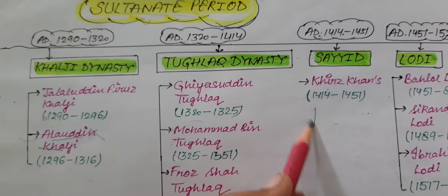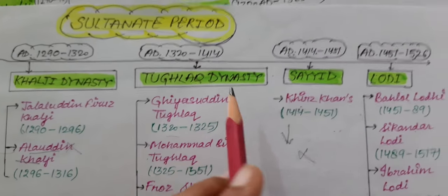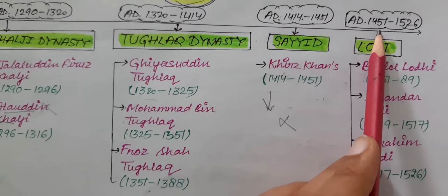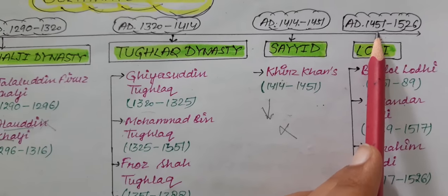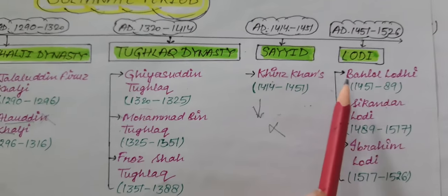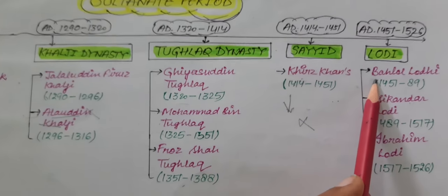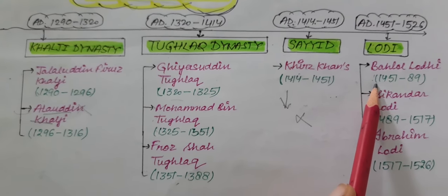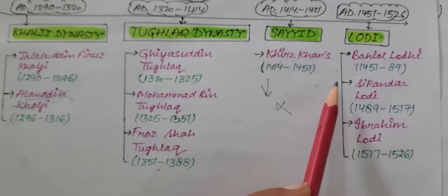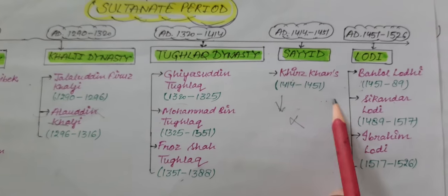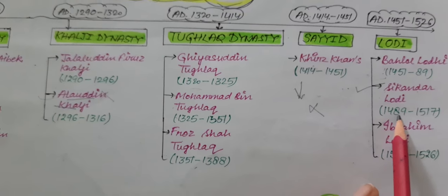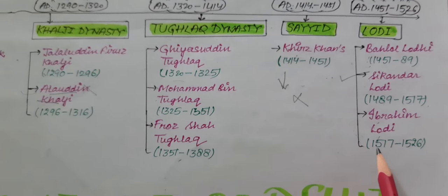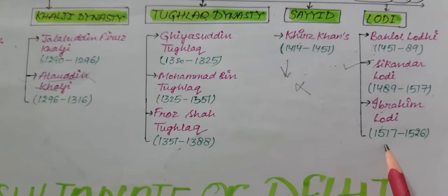The next dynasty was the Lodi Dynasty. The first ruler, Bahlul Lodi, ruled from 1451 AD to 1489 AD. The most important ruler of the Lodi Dynasty was Sikandar Lodi, who ruled from 1489 AD to 1517 AD. The next ruler was Ibrahim Lodi, who ruled from 1517 to 1526 AD.